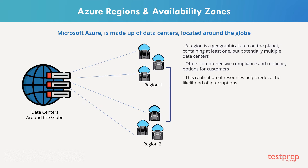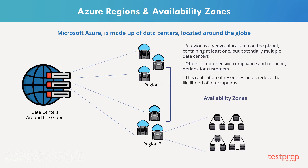Data will continue to reside within the same geography. We now know about geographies and regions. Let us understand what availability zones are. Availability zones are physically separate locations within a region. Each availability zone is made up of one or more data centers equipped with independent power, cooling, and networking.